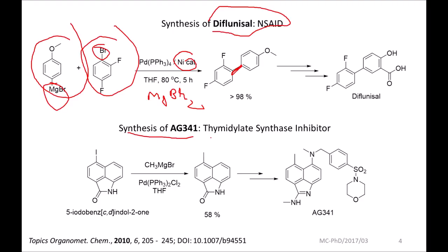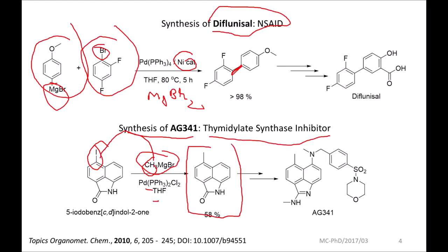Similarly, for the synthesis of AG341, which is a medicinal chemistry inhibitor compound, we add CH₃MgBr with a palladium catalyst. There is an iodine on the substrate, so the CH₃ group replaces the iodine to give the product. The reason we don't simply use a Grignard reagent directly is that CH₃ would also attack the carbonyl carbon, causing side reactions and ring opening of the amide bond. That is why the whole coupling reaction process was developed.